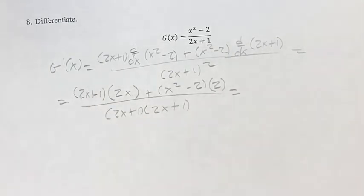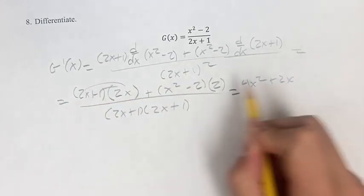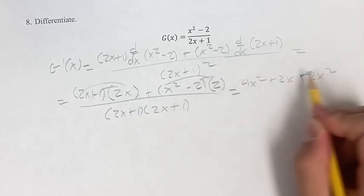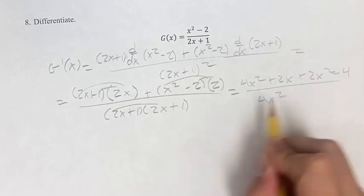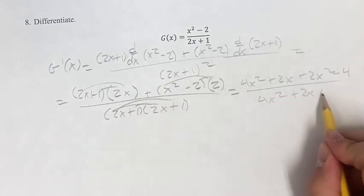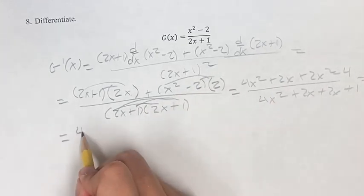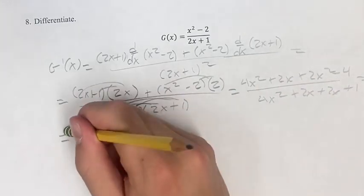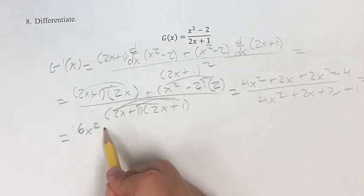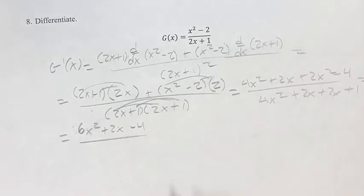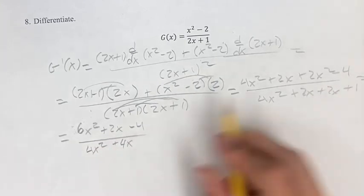Continuing on, distributing everything, we get 4x squared plus 2x plus 2x squared minus 4 over 4x squared plus 4x plus 1.